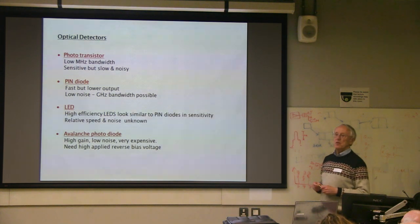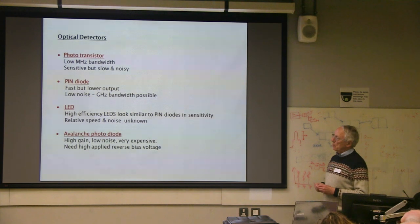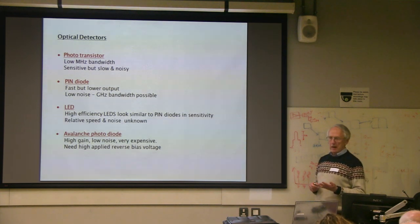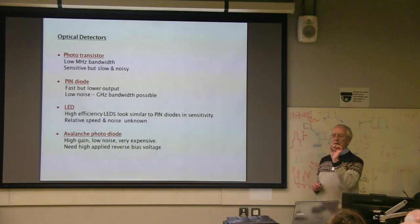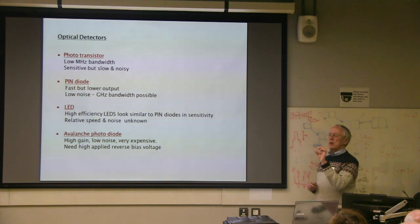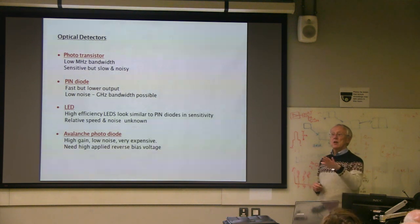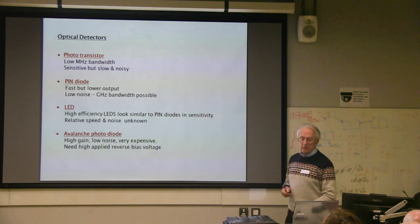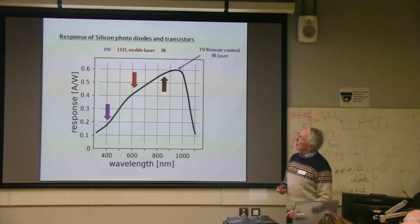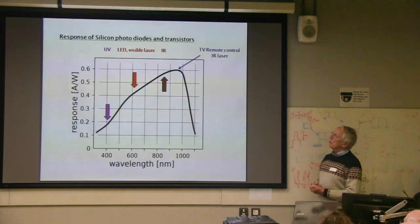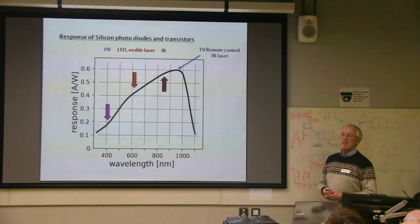Cheaper avalanche photodiodes from electronic cameras exist, but the detector element size is very small and that has limitations for the rest of the optical design. So we'll stick with PIN diodes. Photodiodes are not narrowband detectors — they will more or less detect literally from DC to light.